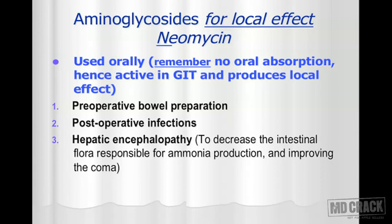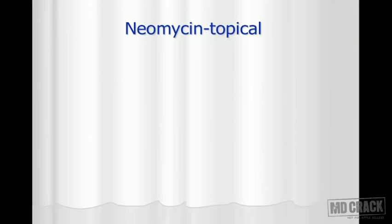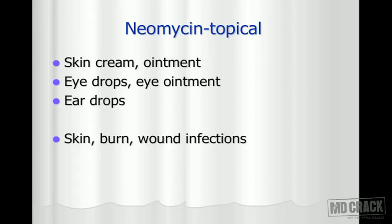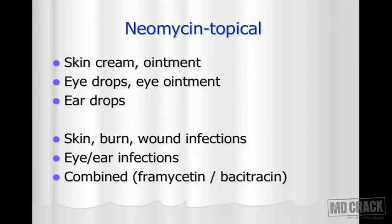Decreasing the intestinal microflora leads to a decrease in ammonia production, producing symptomatic improvement in coma. So the uses of neomycin are: pre-operative bowel preparation, post-operative infections, and hepatic encephalopathy. Neomycin is also very commonly used for topical effects. It is available as skin cream and ointment, eye drops and eye ointment, and ear drops — used for skin burns and wound infections, eye infections, and ear infections. It can be combined with framycetin or bacitracin.